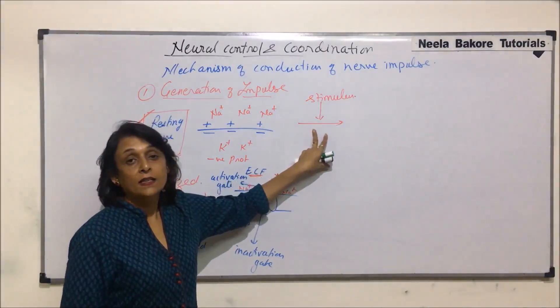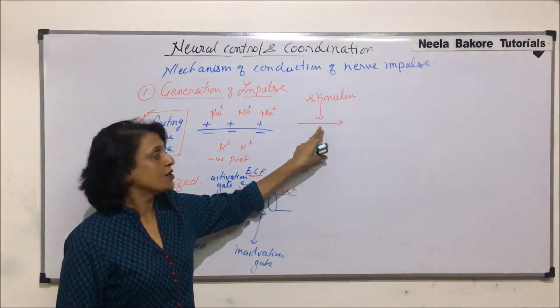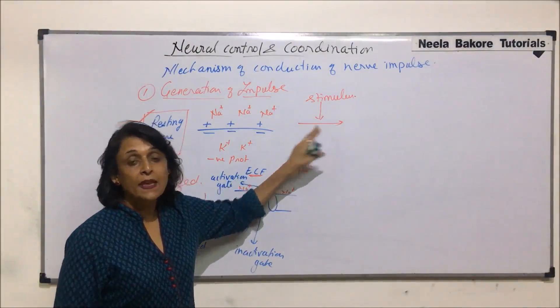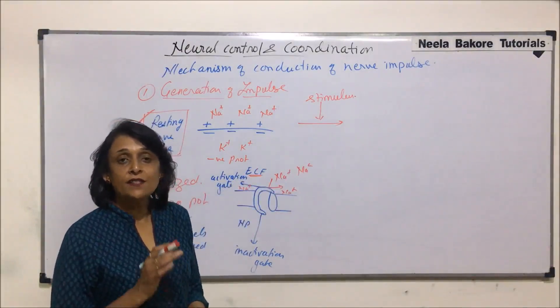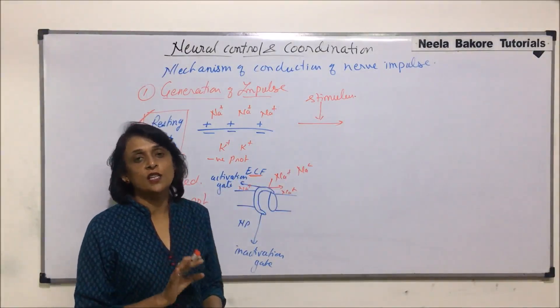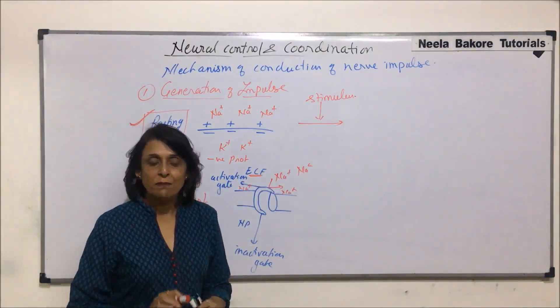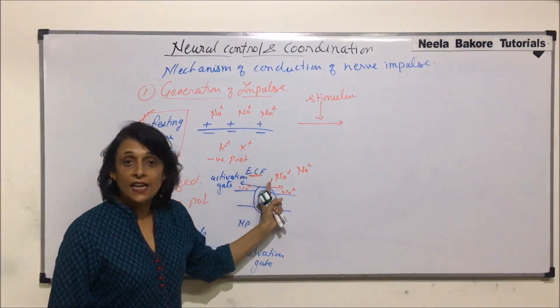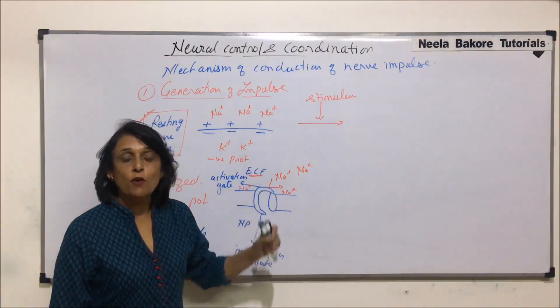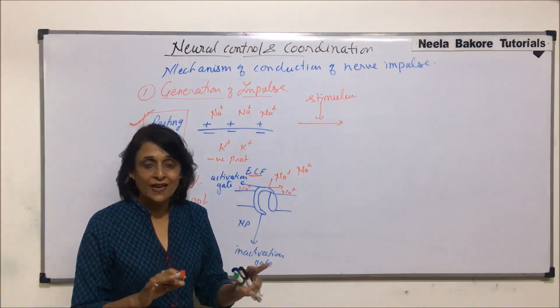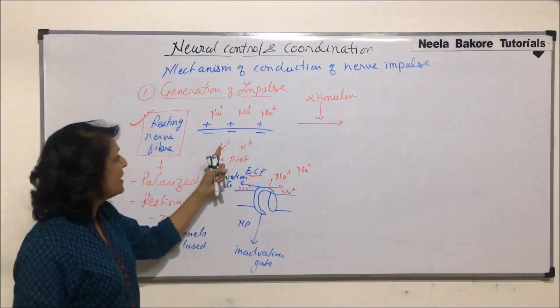When is this impulse generated? On receiving a stimulus — and obviously the stimulus has to be of the threshold value — changes begin. Before receiving the stimulus, the membrane was polarized: electropositive outside, electronegative inside.